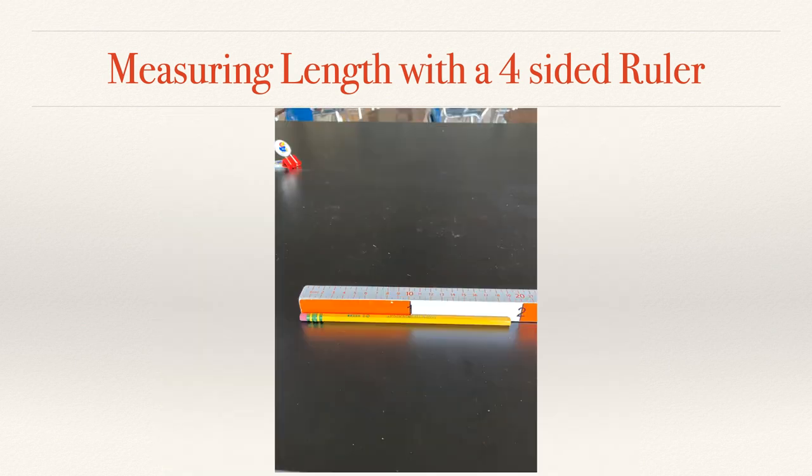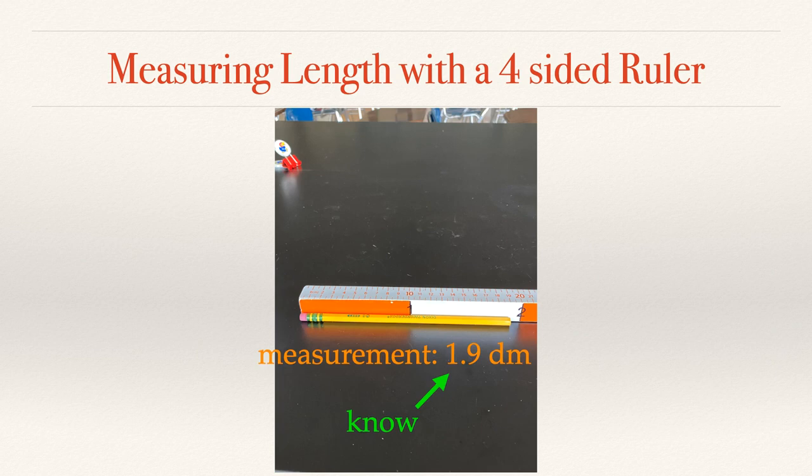Looking at the decimeter side of our ruler, what we know here is that our pencil is more than one decimeter and less than two. So I would measure this around 1.9. So we know that it's more than one, but less than two. And then what we do is we make a guess or we make an estimate about how far down it is. And so if somebody said, I think it's around 1.8, I would say okay with that.